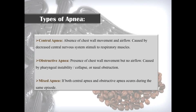What are the types of apnea? There are three types. Number one is central apnea, which means absence of chest wall movement and air flow. There is no chest wall movement and no air flow, and this is caused by decreased central nervous system stimuli to the respiratory muscles.